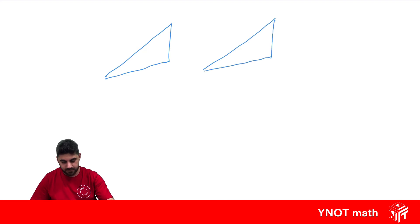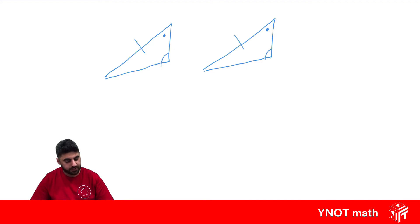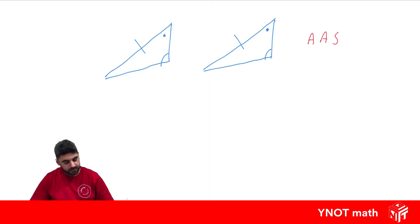If we know this side equals this side, this angle equals this angle, and this angle equals this angle, that's also enough information to know that two triangles are congruent. We call this one AAS because we have two angles that are equal and one pair of sides that are equal.